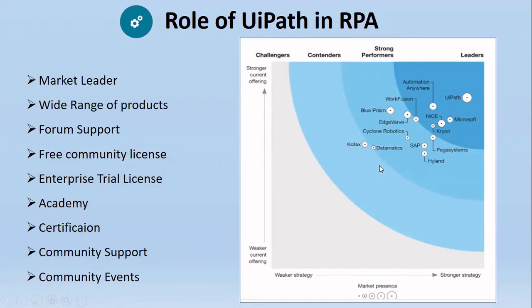We would be focusing on UiPath to become the citizen developer. There are a number of reasons to use UiPath: it has been a market leader for quite a long time, it has a wide range of products, and the forum and community support will help you a lot during your automation journey. It provides a free community license so you can have hands-on practical experience while learning. It also provides certifications through its academy, and there are many community events where you can bring up queries and get a better picture of automation.